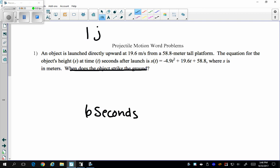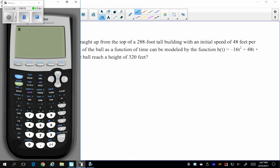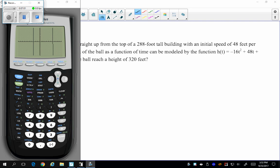My second equation is about a ball being thrown up. And then obviously the ball comes back down. And the function I'm given is negative 16t squared plus 48t plus 288. And it's asking me, when will the ball reach a height of 320 feet? So again, I want to plug this into my calculator into the y equals. I'm going to plug in my equation. And then I'm going to graph it, just to see how it looks.